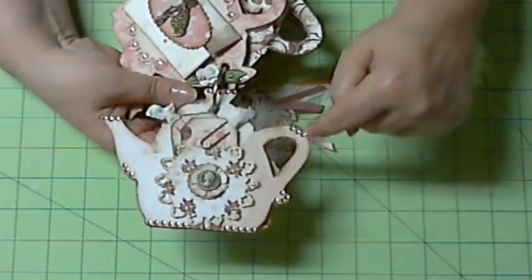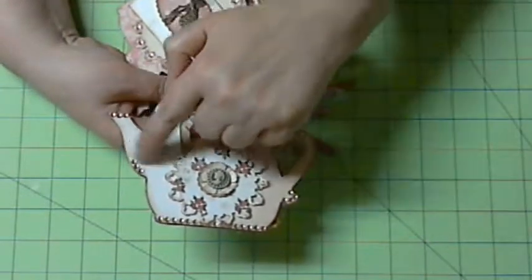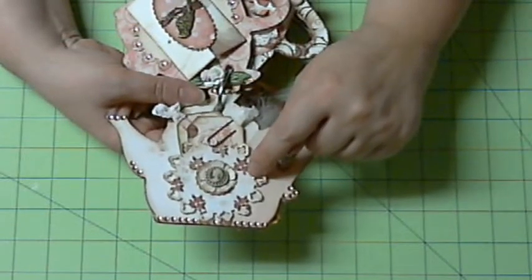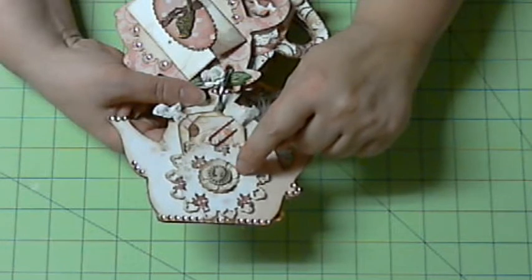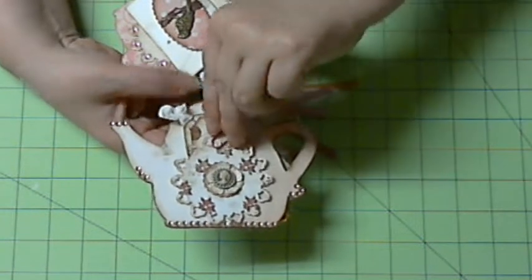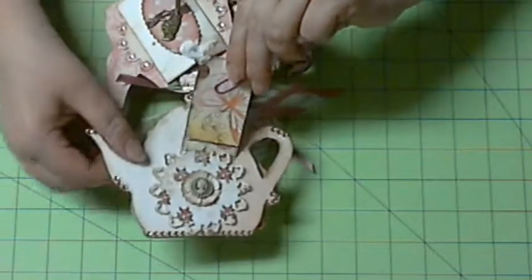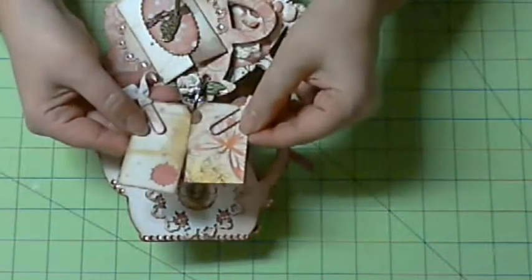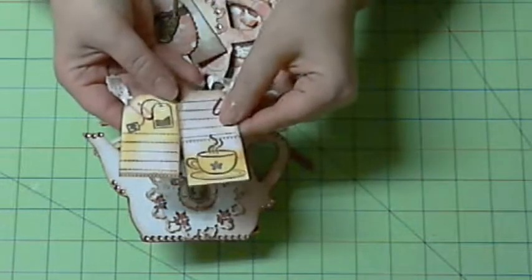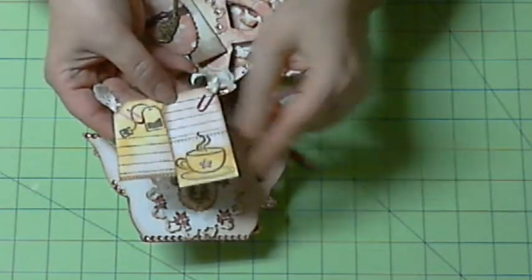And then for the second page, I put some bling on some of the edges. This I cut with a Spellbinder and then this flower I cut with the Tim Holtz die, and then I put a cameo in the middle.